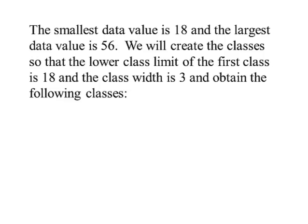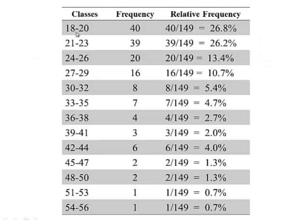Let's say we want to create the classes so that the lower class limit of the first class is 18 and the class width is 3. We start at 18, we want a class width of 3: 18, 19, 20. And then we would start our new class starting at 21 and going to 23.